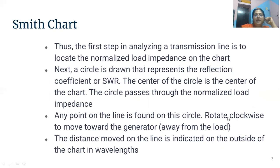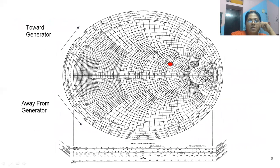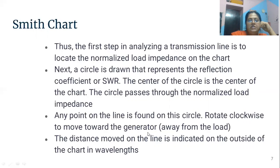The first step in analyzing a transmission line is to locate the normalized load impedances on the chart. Next, a circle is drawn that represents the reflection coefficient or SWR. The center of the circle is the center of the chart, and the circle passes through the normalized load impedances. Any point on the line is found on this circle. Rotate clockwise to move towards the generator and away from the load. The distance moved on the line is indicated on the outside of the chart. In this way, we can analyze the transmission line on the Smith chart — moving the point either clockwise or anticlockwise, upward or downward.